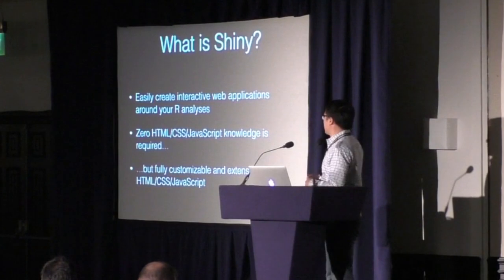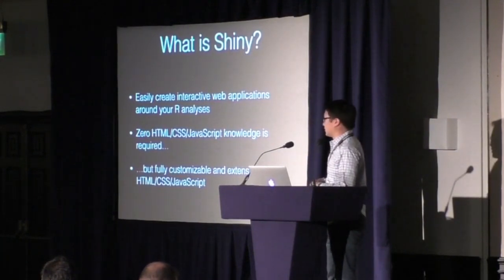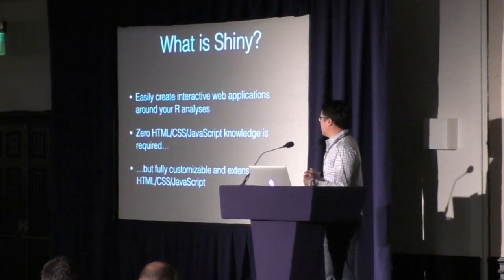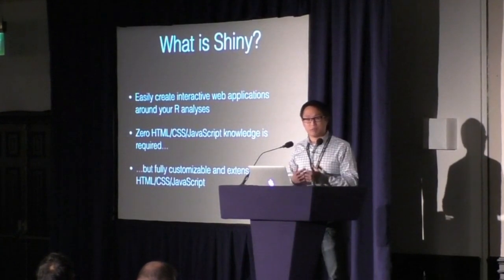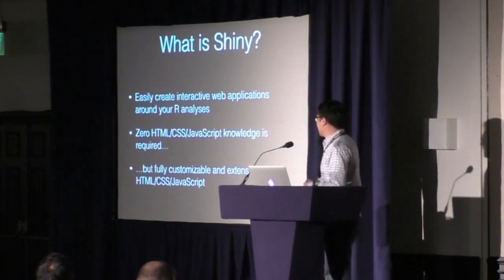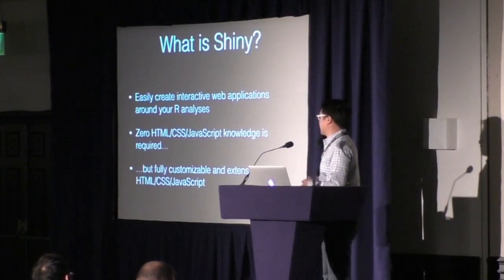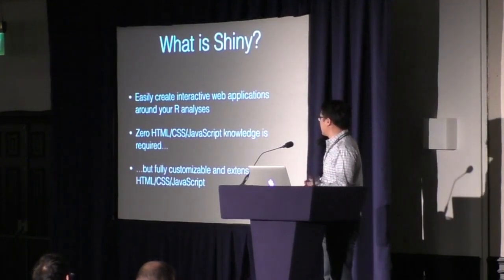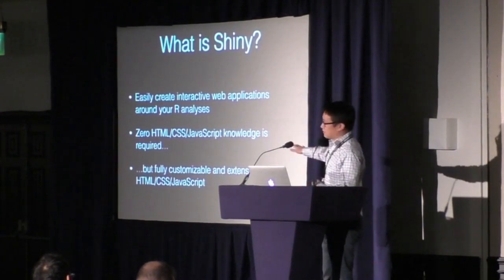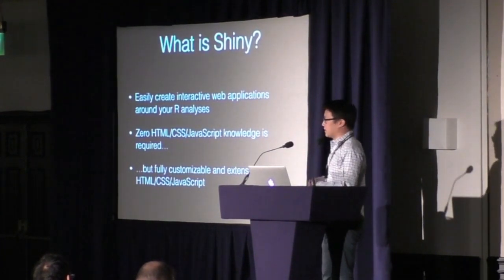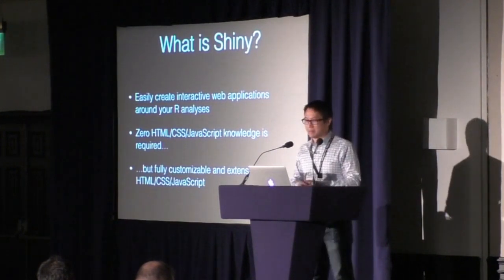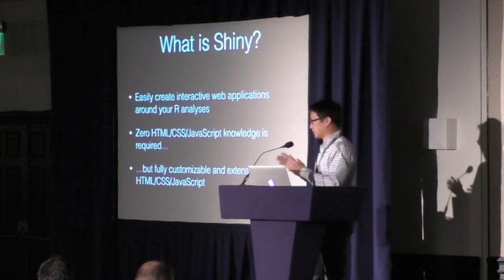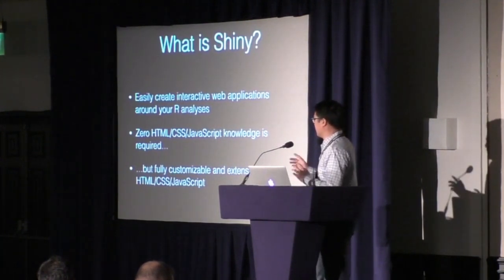Shiny is a package that lets you easily create your own interactive web applications around your R analysis. It is not intended to be a general-purpose web framework — it doesn't replace Ruby on Rails, you wouldn't build a web store in Shiny. It is designed for people who work with R to analyze data and build cool interfaces on top of them. It does not require any web development skills — no HTML, CSS, or JavaScript. We wanted to be able to tell any R user: if you can write a function and subset a data frame, you are ready to write Shiny apps.